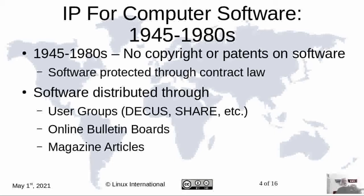There was also software distributed through user groups, like DECUS from Digital Equipment Corporation, or SHARE from IBM, and others. These were users who wrote software for their own use but then said, I'm not in the business of selling software — I'm going to donate it to these user groups. They would put the software into catalogs, distribute those catalogs, and people could order the software on perhaps paper tape or magnetic tape. There was no guarantee the software would work, and no obligation to fix bugs — it was simply shared because the author had it and was willing to let somebody else use it.